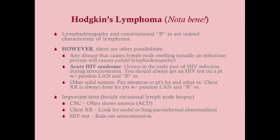Acute HIV syndrome occurs early in HIV infection. Within about two weeks of exposure, the patient seroconverts and develops an inflammatory reaction with lymphadenopathy and constitutional symptoms as HIV proliferates. The immune system then suppresses the viral load, but during that acute phase those symptoms are present. Always order an HIV test when a patient presents with lymphadenopathy and B symptoms, especially with a history of unprotected sex or drug use.